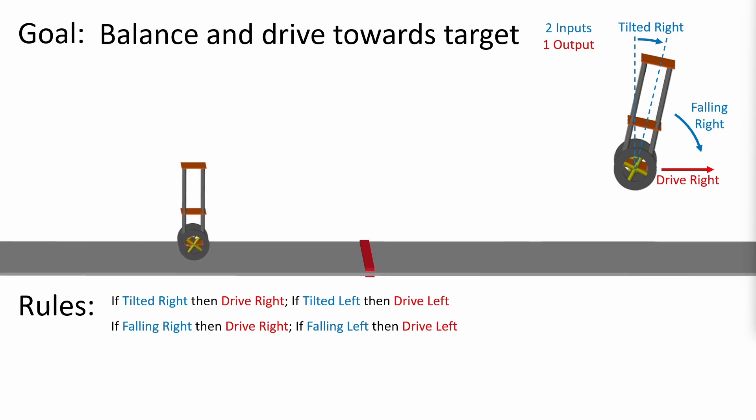Let's add these new rules and run the simulation again. Much better. However, we still have a problem. The rider most likely wants to actually drive somewhere. In this case, towards the red line.